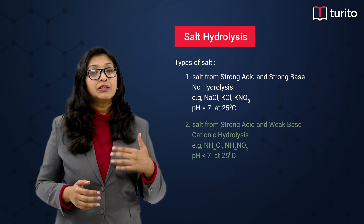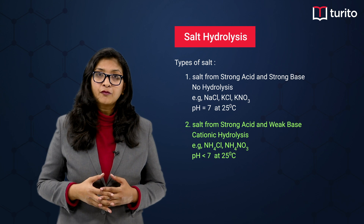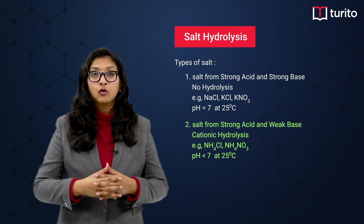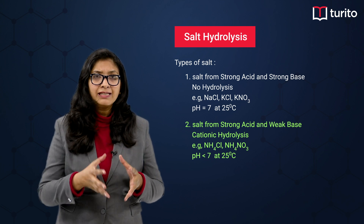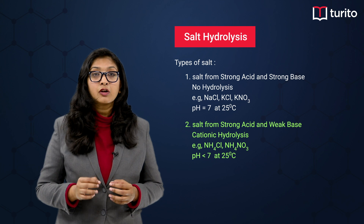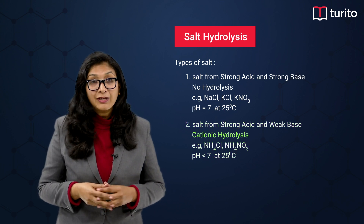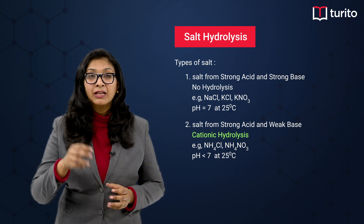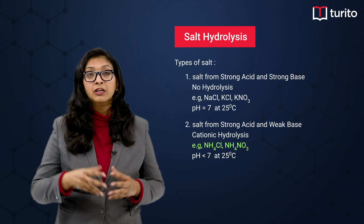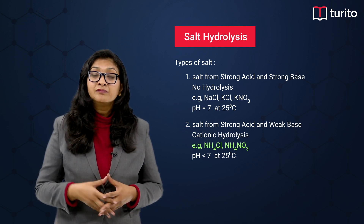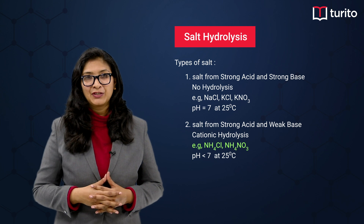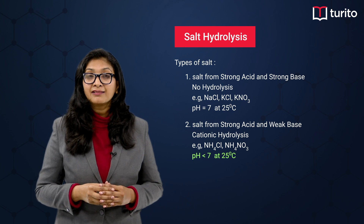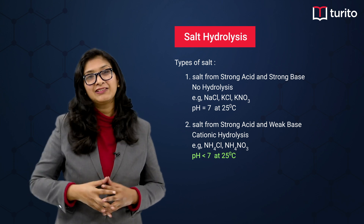The second type of salts are formed from the combination of a strong acid and a weak base. These salts undergo cationic hydrolysis, because the base is weak. Examples are NH4Cl and NH4NO3. The pH at 25°C will be less than 7 for these type of salts.